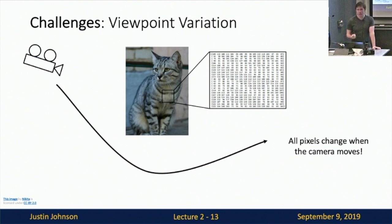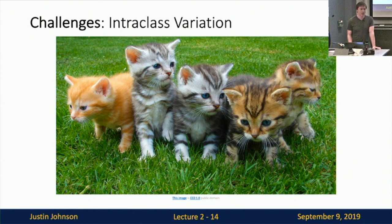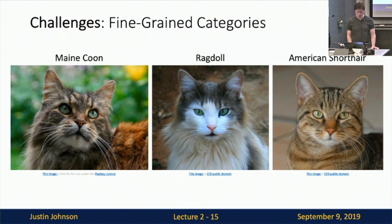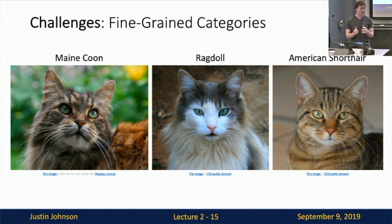Beyond viewpoint variation, we need to deal with intraclass variation — different cats all look very different, producing very different grids of pixel values. We also need to handle fine-grained categories, where we want to recognize different breeds of cats that appear very visually similar. It's not at all clear how to write algorithms that are robust to these changes in image pixels.